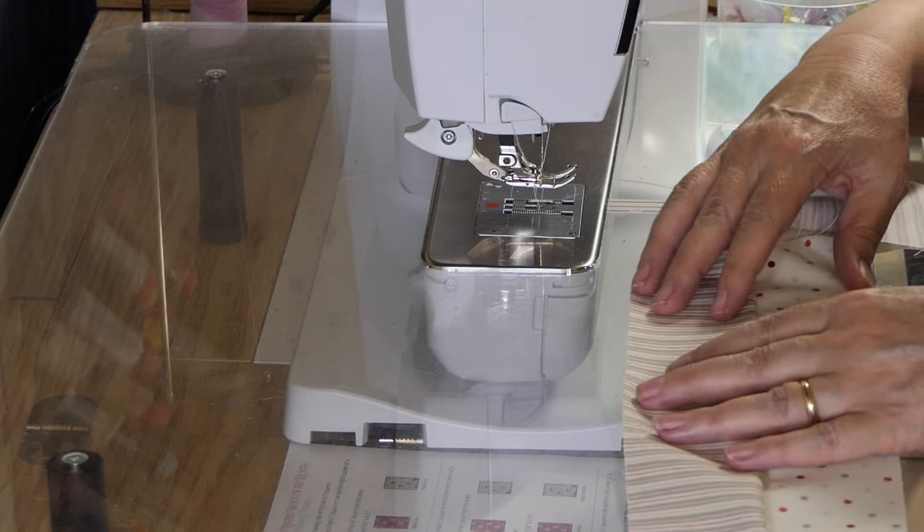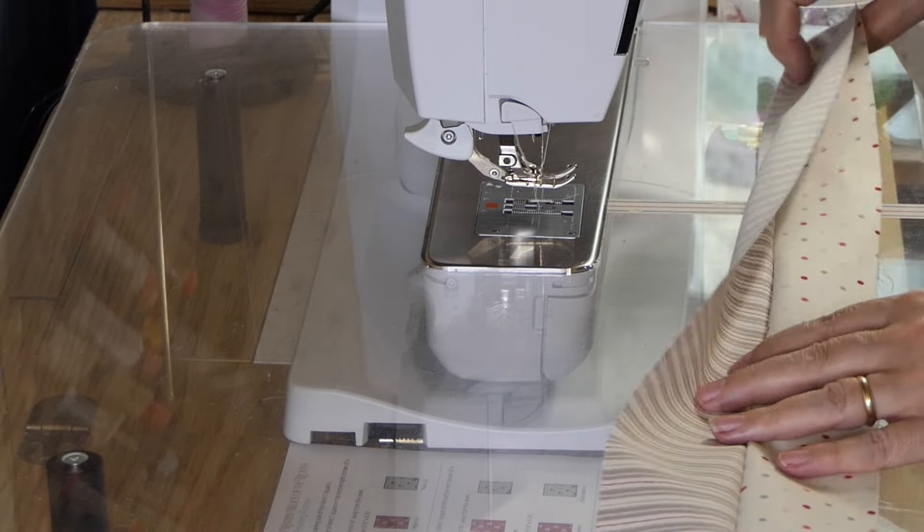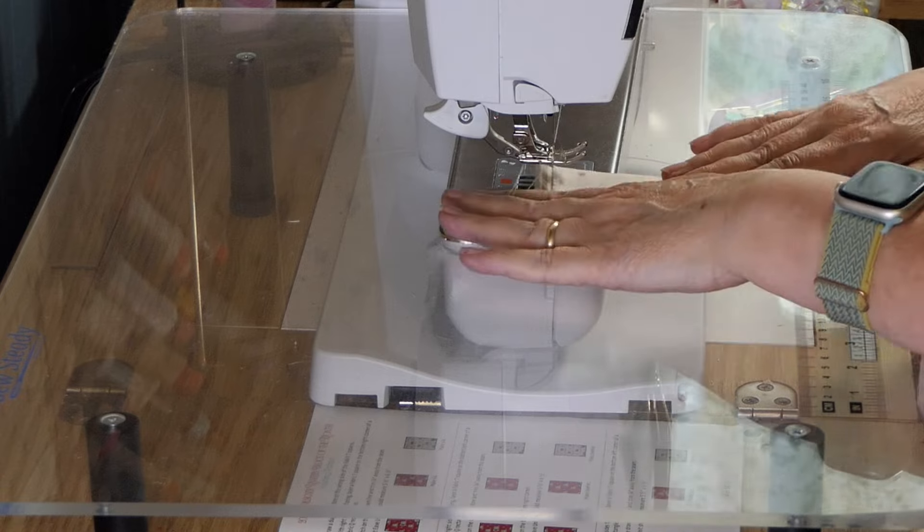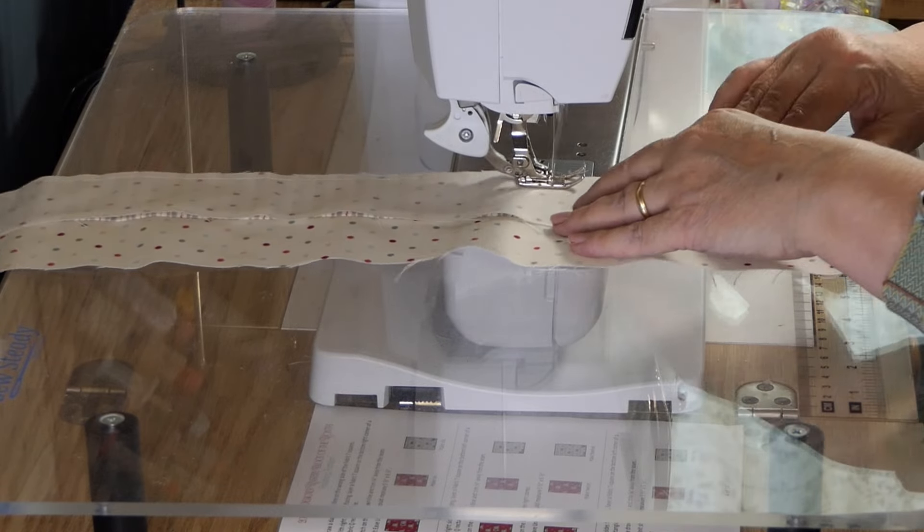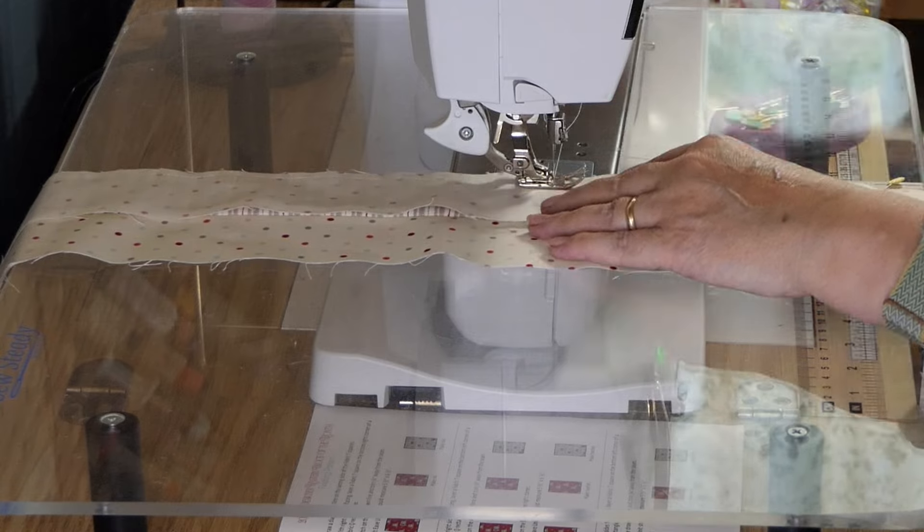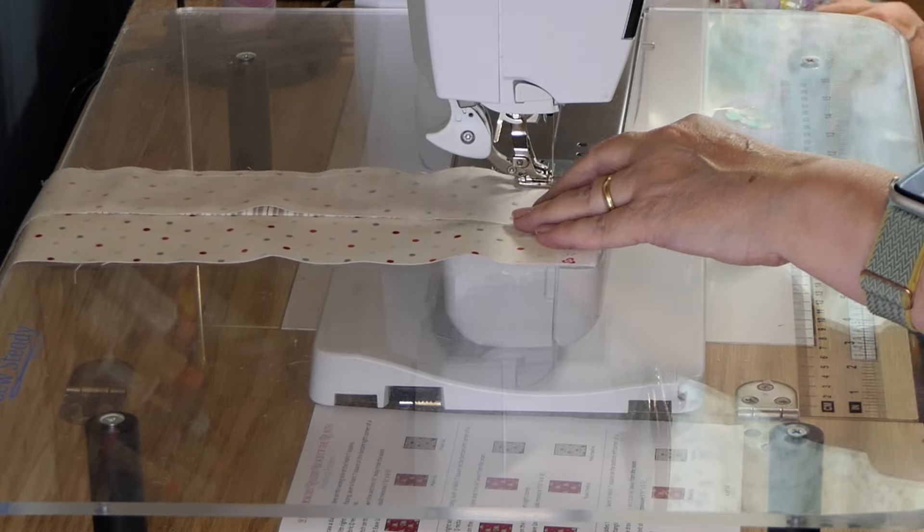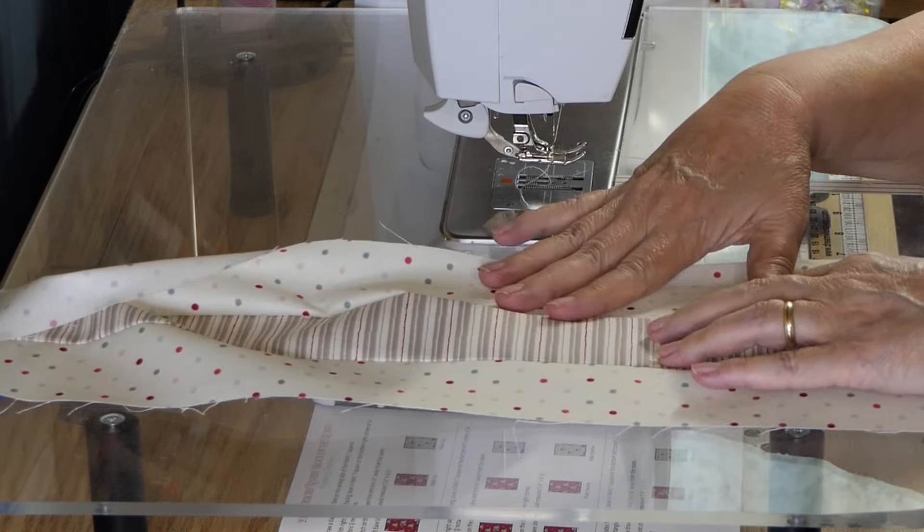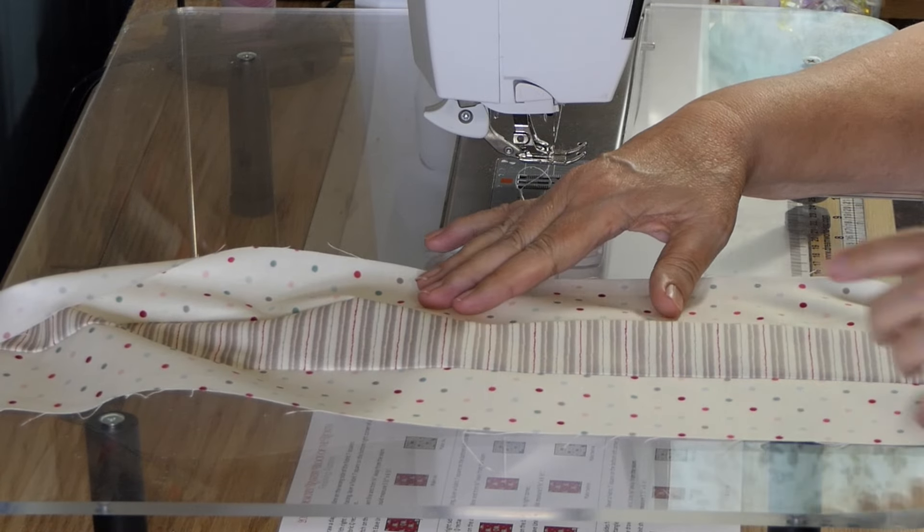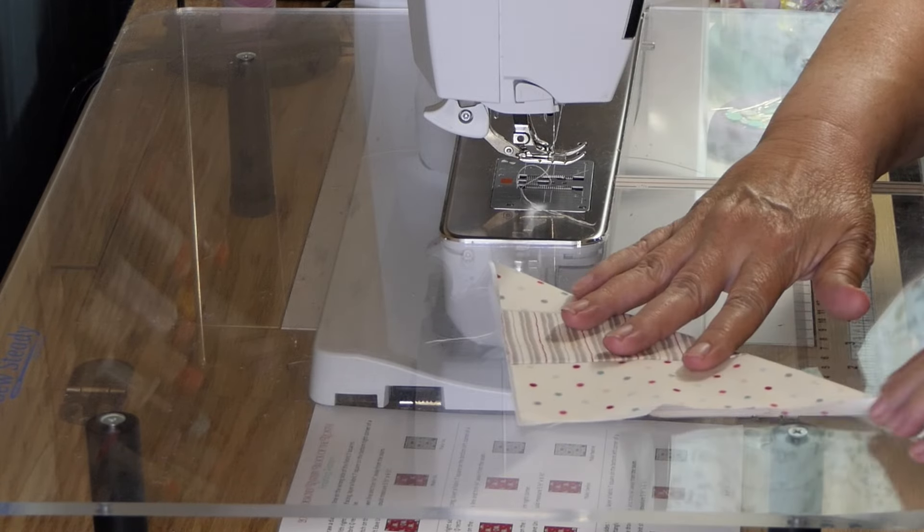There we go, and both the side seams will get pressed towards the stripe. So let me get the other one pinned and I'll be right back. Now I'm going to iron this side to the middle as well and then we are going to sub cut it into squares.